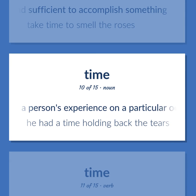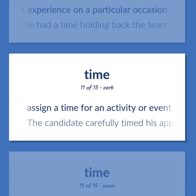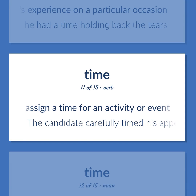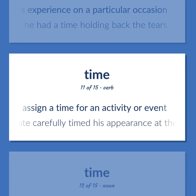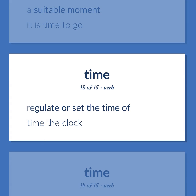TIME: A person's experience on a particular occasion. He had a time holding back the tears. Assign a time for an activity or event. The candidate carefully timed his appearance at the disaster scene. A suitable moment — it is time to go. Regulate or set the time of.